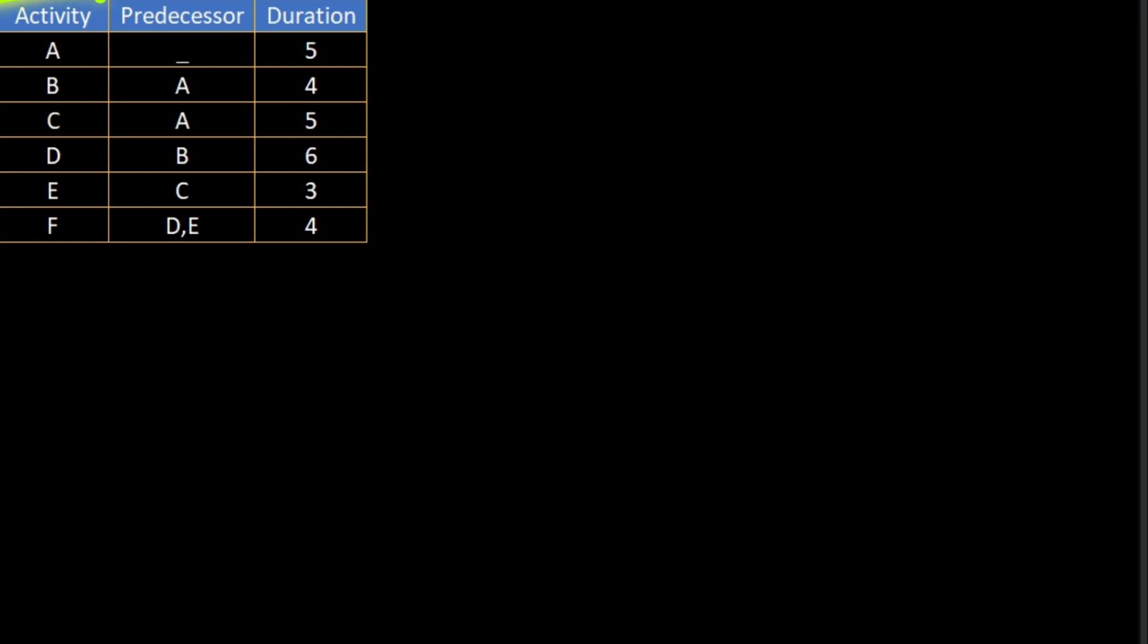It has three columns. First is the number of activities present in the project for completion. Then there is a predecessor box, and these activities can only be started once the predecessor activity is completed. Like B can only be started if A is completed totally. C can only start if and only if A has completed. Similarly, F can only start if D and E both are completed. If there is no predecessor, an activity can start independently without any preceding activity.